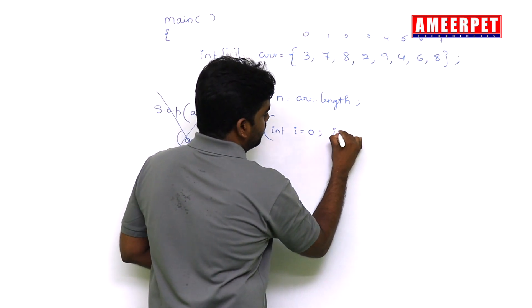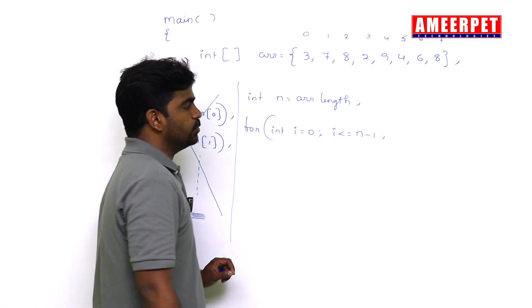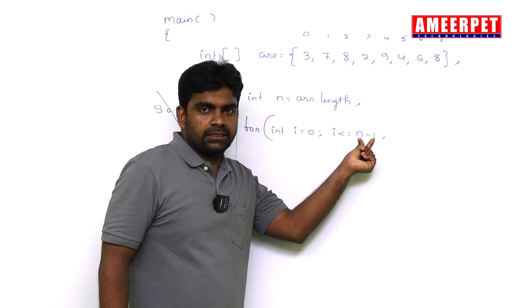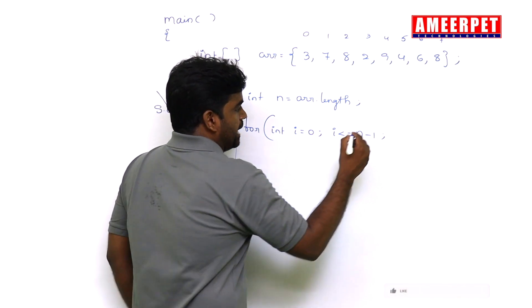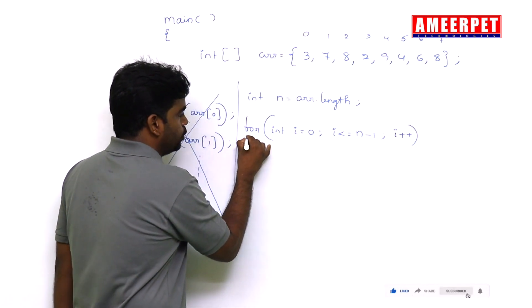But here, repeat the loop not up to 8. n minus 1, up to 7 only you repeat, less than or equal to n minus 1. n minus 1, length minus 1, i++. Just repeat the loop, then print.